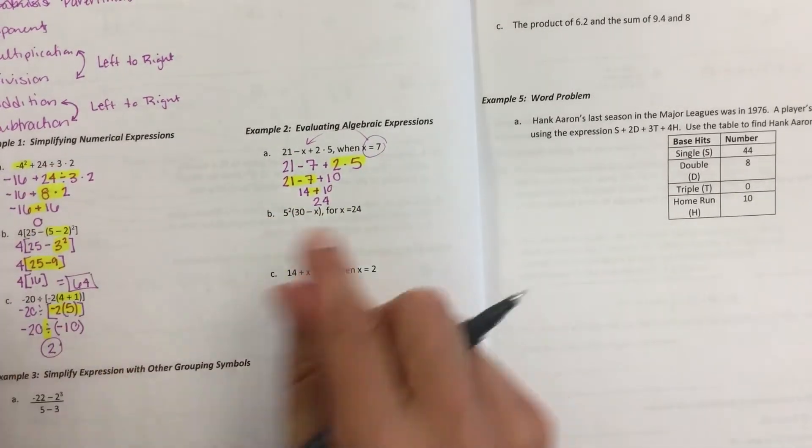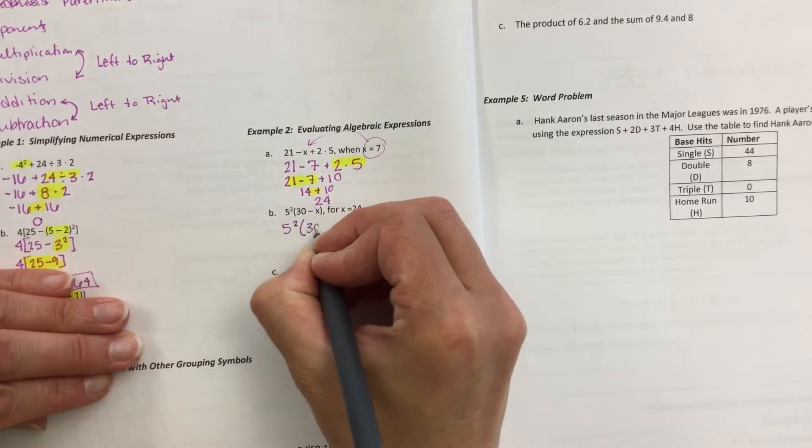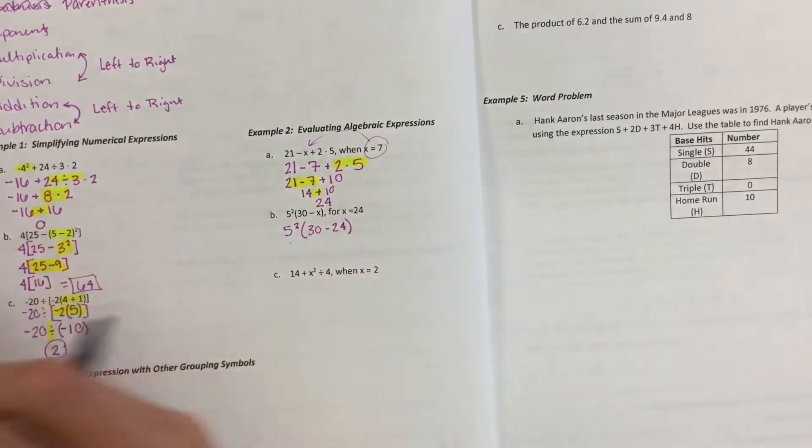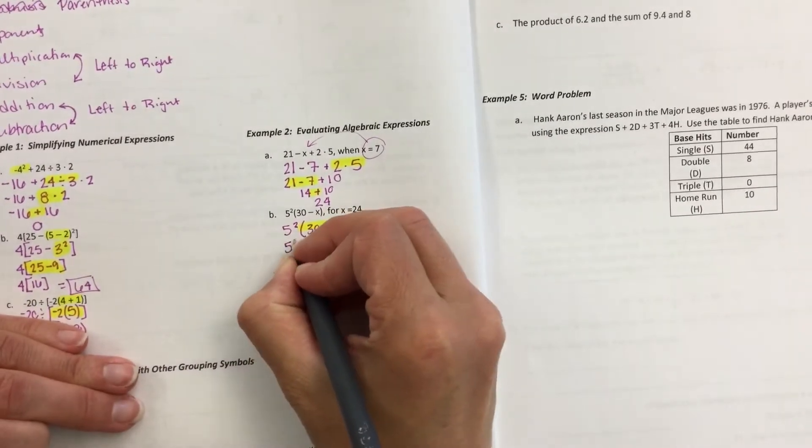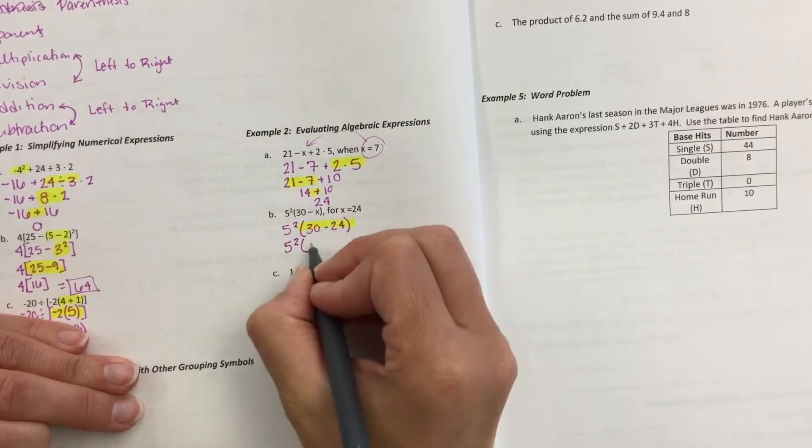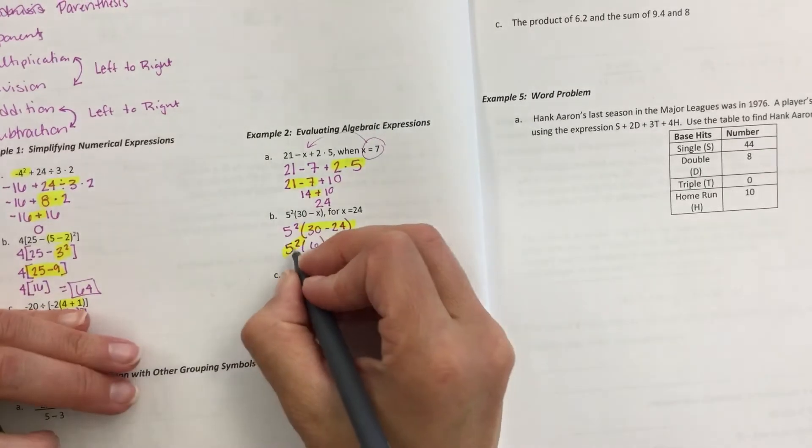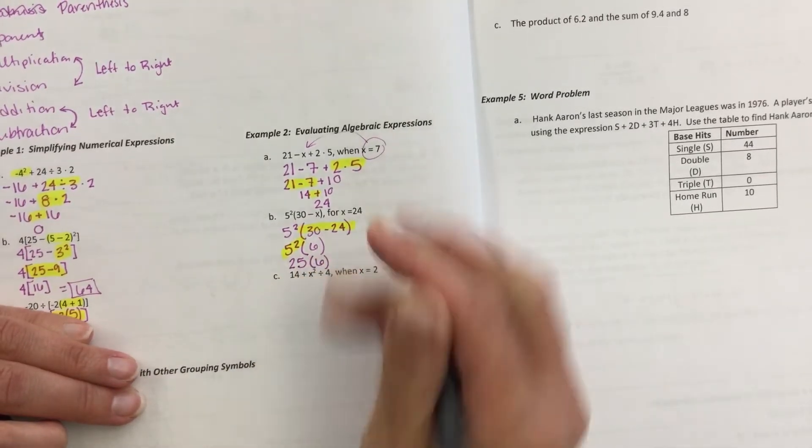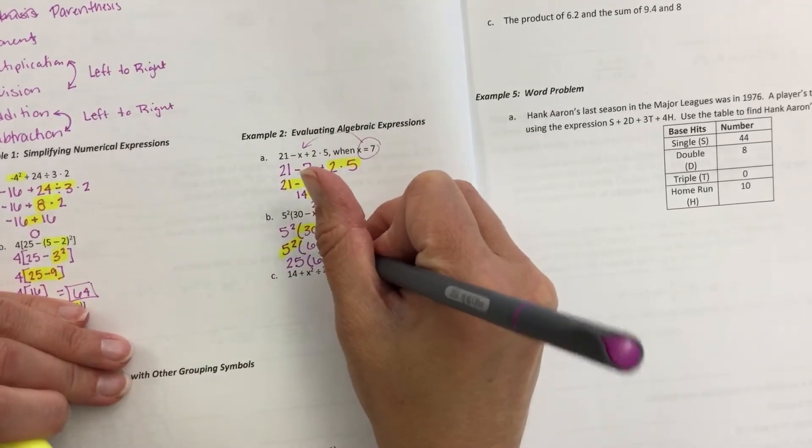Okay, my next one. 24 goes in for x. So 5 squared times 30 minus 24. Parentheses first. So it's inside those parentheses. 5 squared times... This would give me 6. Then I do my exponent. 5 times 5 is 25. 25 times 6. It's like taking a quarter times 6. A quarter times 6 would be 150.